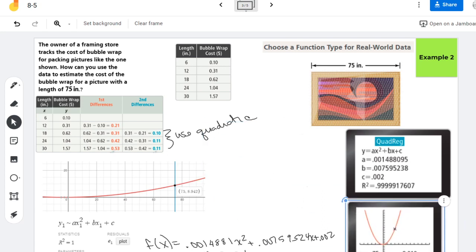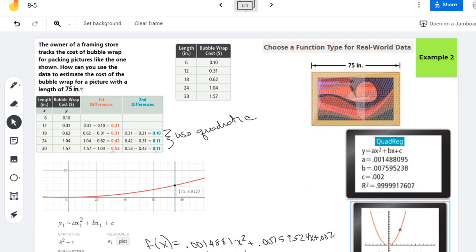And so when they rounded to make their equation, that rounding is changing their answer. So do you see how their estimate, what they got was $9.01 and I had $8.94? So that rounding mid problem is changing the actual answer.